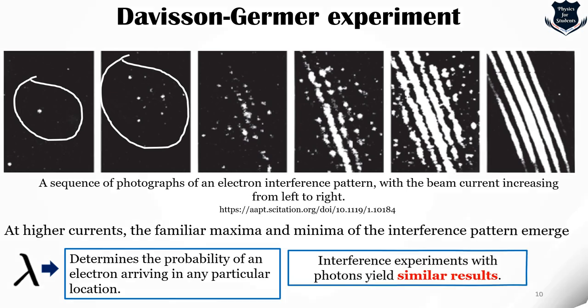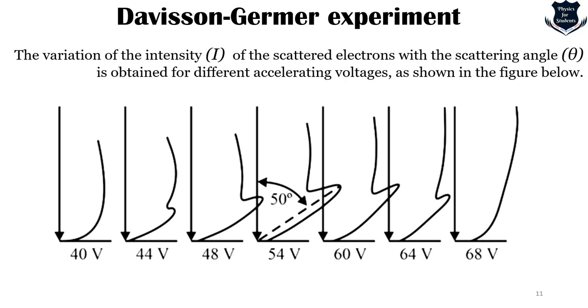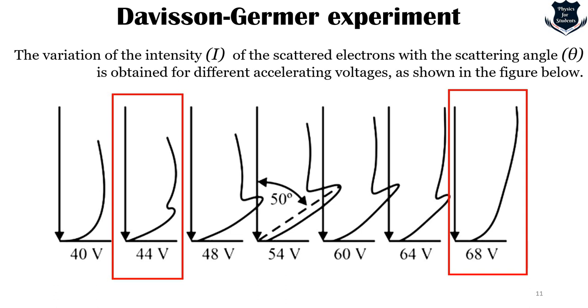Now we move to the Davison-Germer experiment results. This shows the variation of the intensity of the scattered electrons with the scattering angle theta as obtained from different accelerating voltages. Most important is that by varying the acceleration voltage from 44 volts to around 68 volts, it was noticed that a strong peak appeared in the intensity I of the scattered electrons, which is around 54 volts with a scattering angle of 50 degrees. This is prior to the experiment arrangement, showing the intensity ranging from 44 volts to 50 volts gives a decent number which is 54 volts.